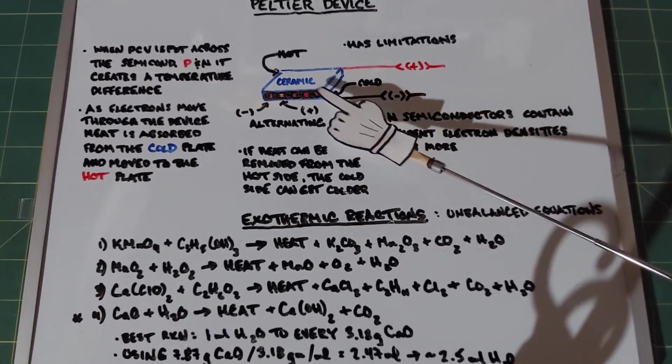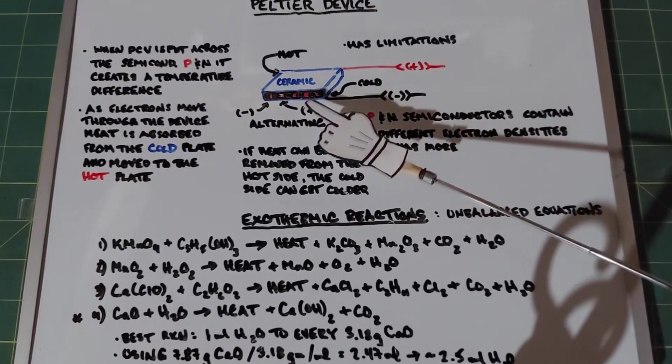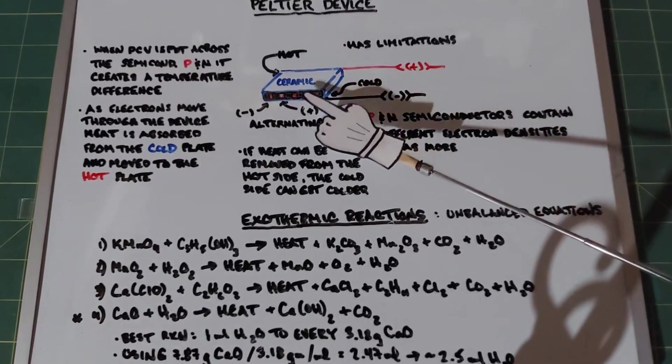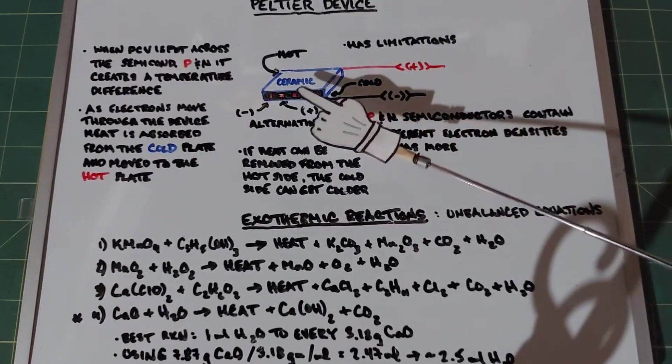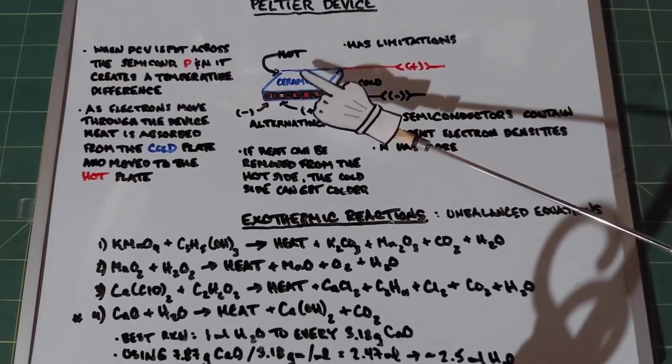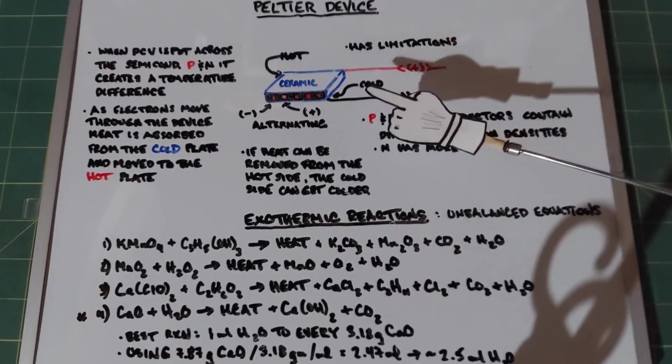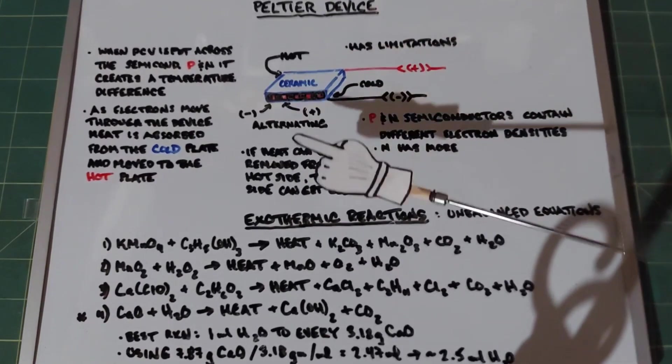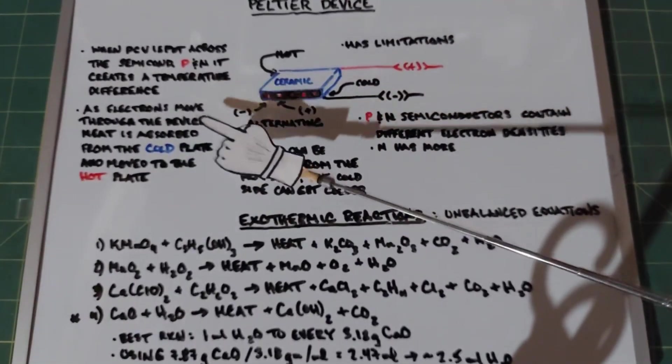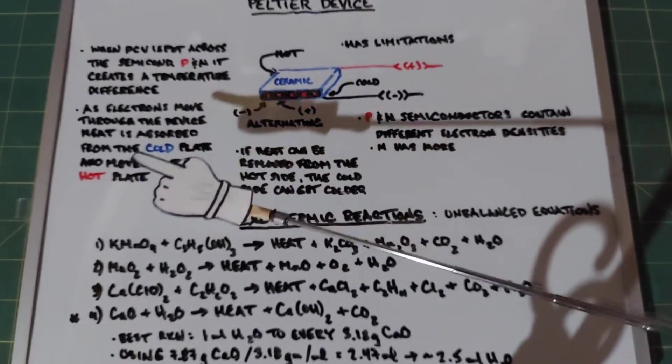However, because there's a different number of electrons in each pod, the heat is carried by the negative ones faster to one plate than the positive ones are. So one plate gets a flow of heated electrons heading toward it at a rapid rate, whereas the other ones are not moving as quickly. As these electrons move through the device, heat is absorbed from the cold side and moved to the hot side.